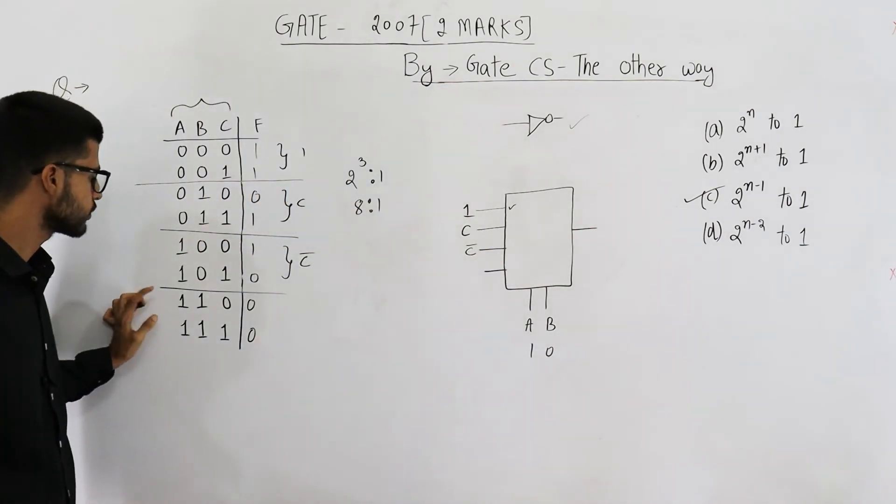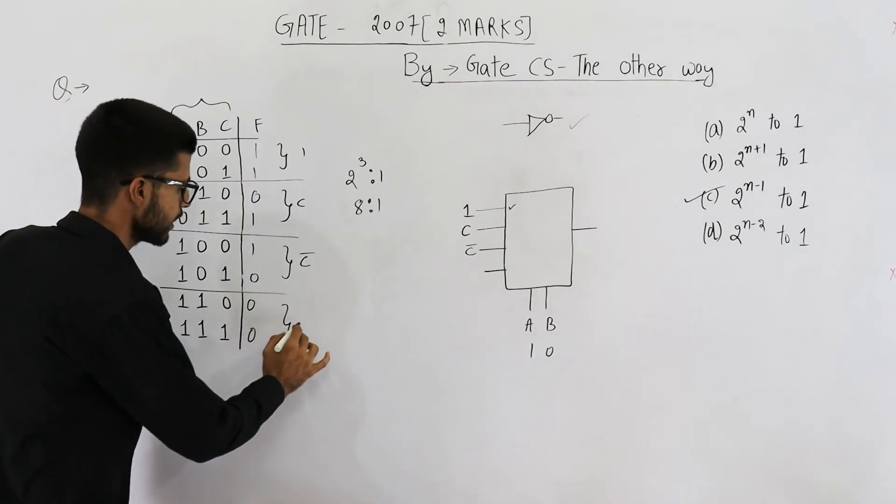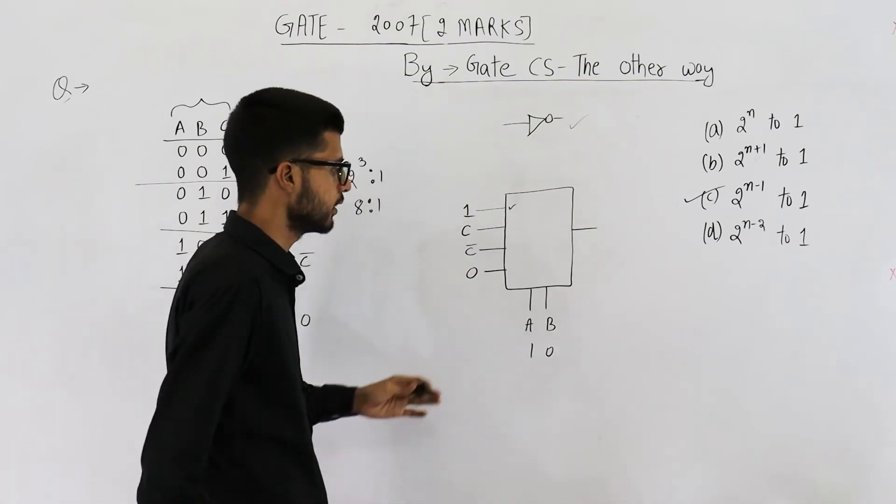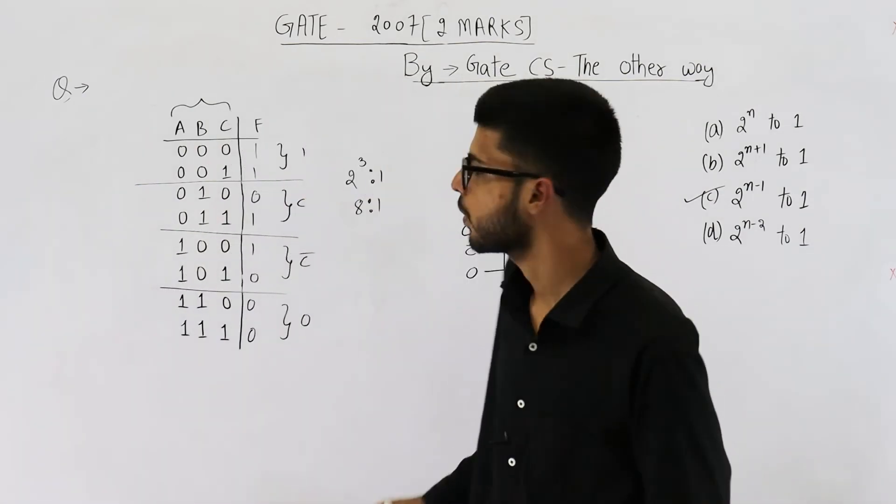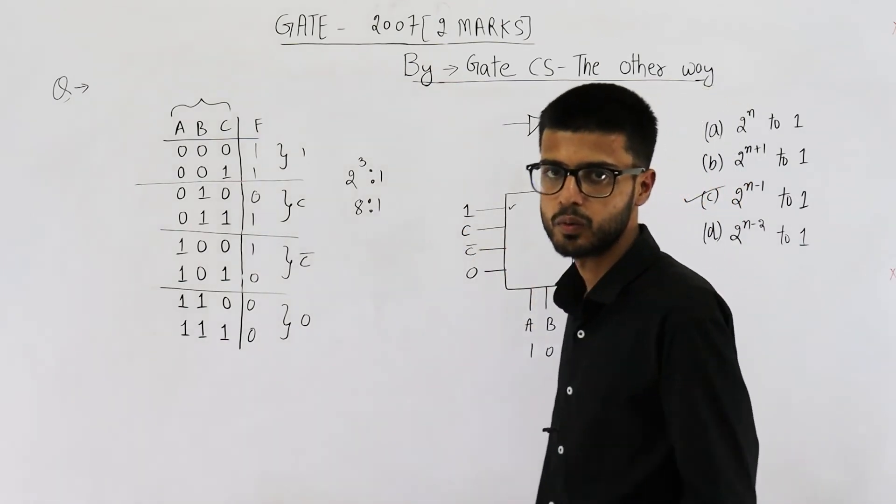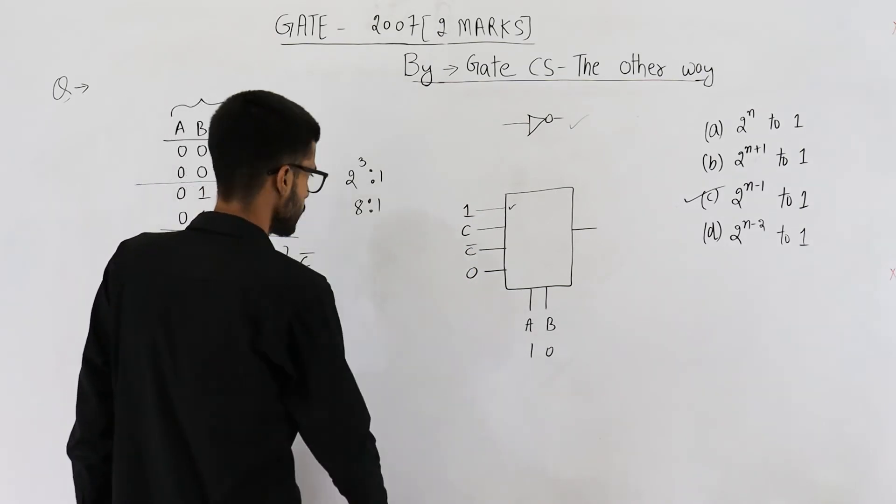And in last case when both a and b are one. The output is always zero. That means it is independent of c in this case. So simply connect zero here. This is the implementation of this function using one mux and not get. Where is the not get used? It is used to complement c. You can have a look.